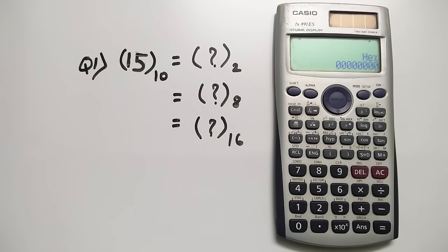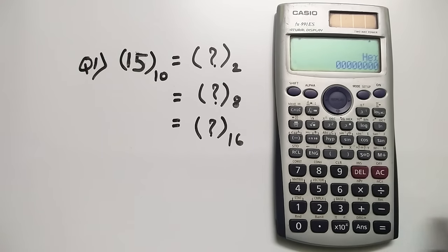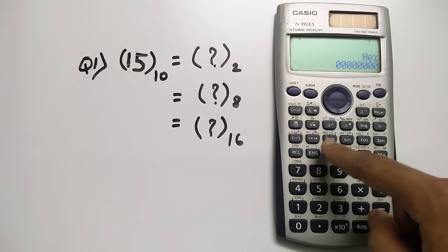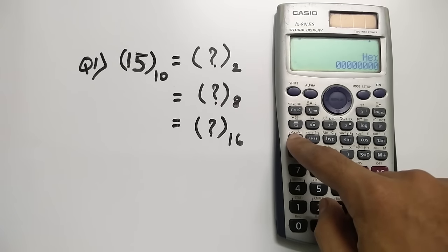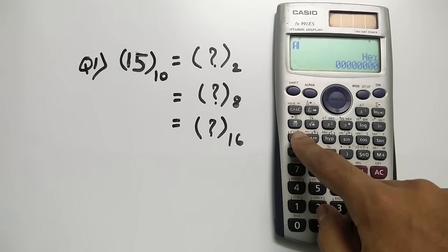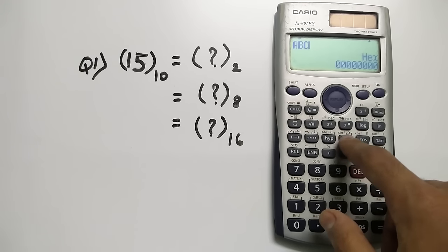So if you want to actually change a hexadecimal value, for example I'll type in F, and you can see the values of A to F in these buttons starting from here. This is A, this is B, this is C, this is D, E, F.